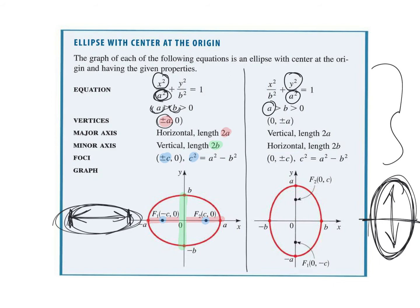Other than that, the two forms are pretty similar, except where the actual numbers are placed. When a² is bigger under y, our vertices are at ±a on the y values, the vertical length is 2a, and the horizontal length is 2b. We find the foci the same way, except the foci are at (0, ±c). So you're essentially switching your x and y values.